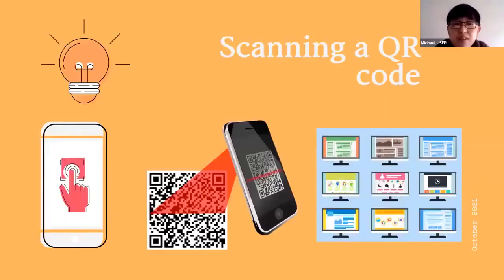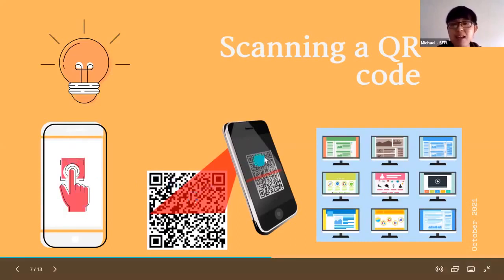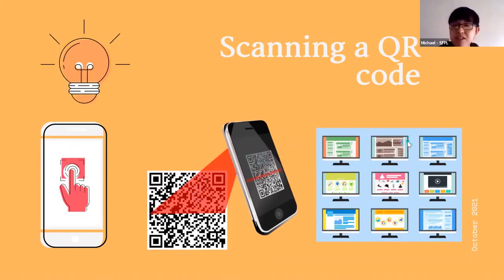So scanning QR codes — what's the process? Normally, you have your device, you activate the camera, and you aim your device at a QR code and it will scan it. Once it scans, it will direct you to wherever it's trying to send you. Normally it would go to a website, you click on that link, and you go directly to the website on your device.